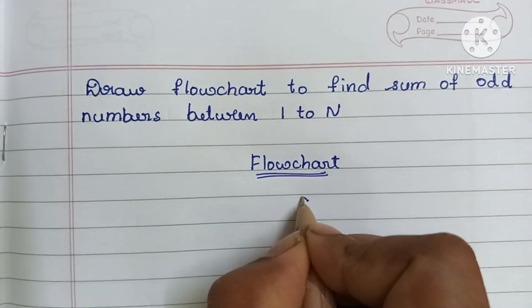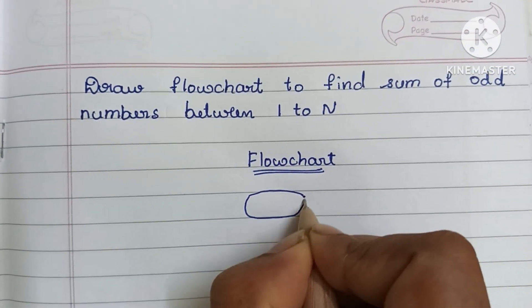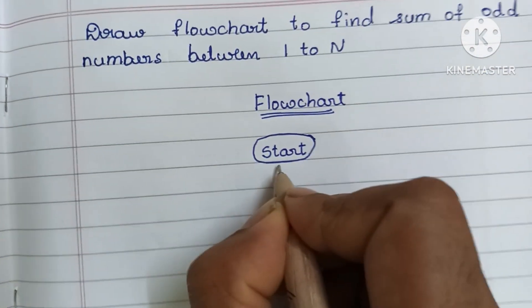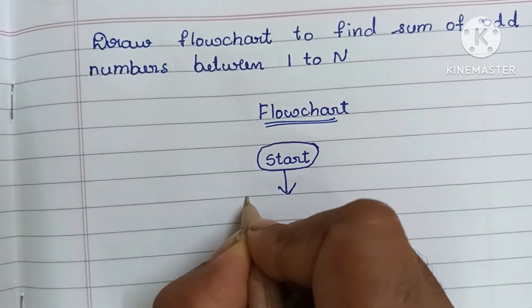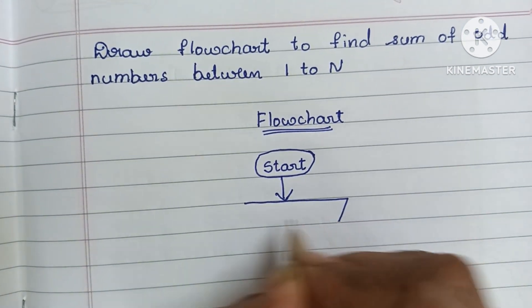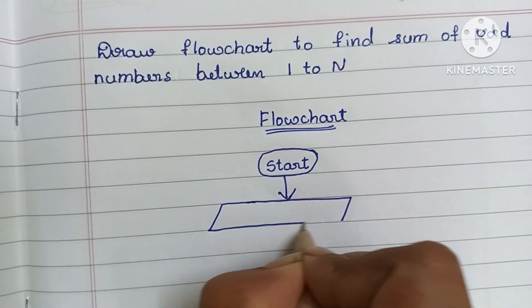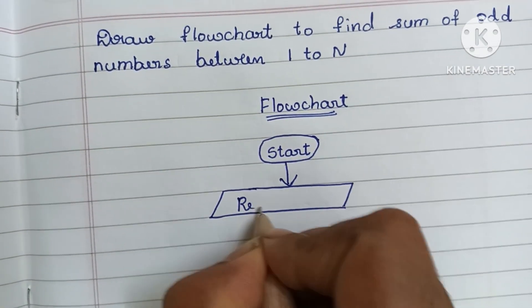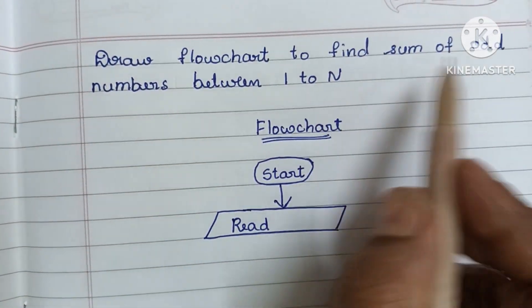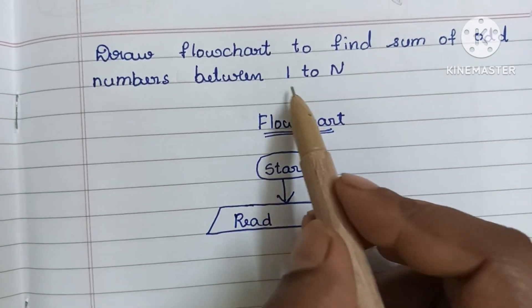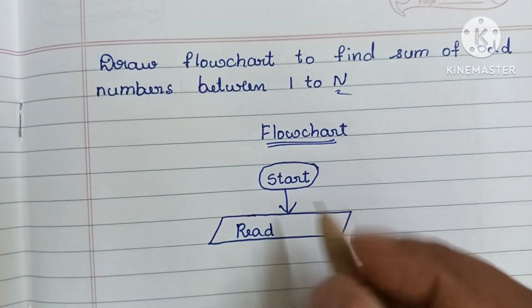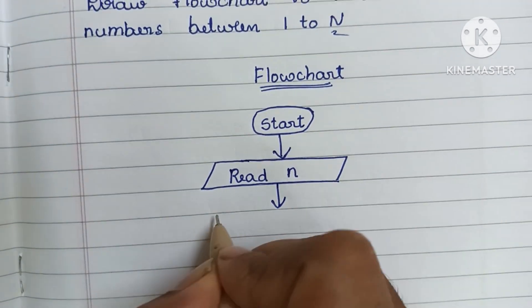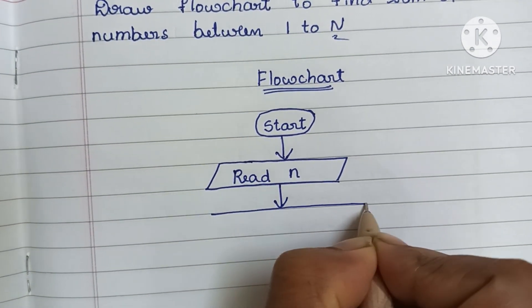A flowchart always starts with a start statement, so first we have to write the start statement. Next we have to read the input value. Input value is always written within a parallelogram shape. Here we have to find the sum of odd numbers between 1 to N, so we have to read N. Read N.